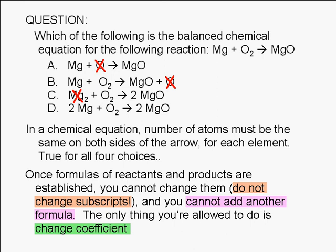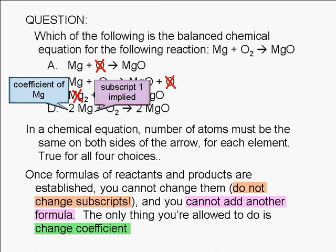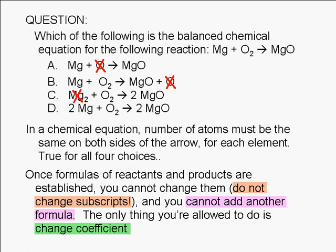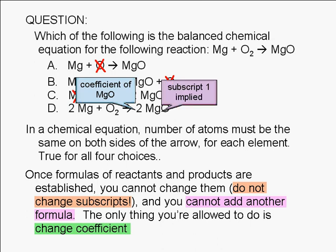Let's verify that we, in fact, have a balanced chemical equation in choice D. Remember that to count atoms, we multiply the coefficient and the subscript. So, for magnesium, we have 2 on the left, 2 times 1 equals 2, and 2 on the right, 2 times 1 equals 2.